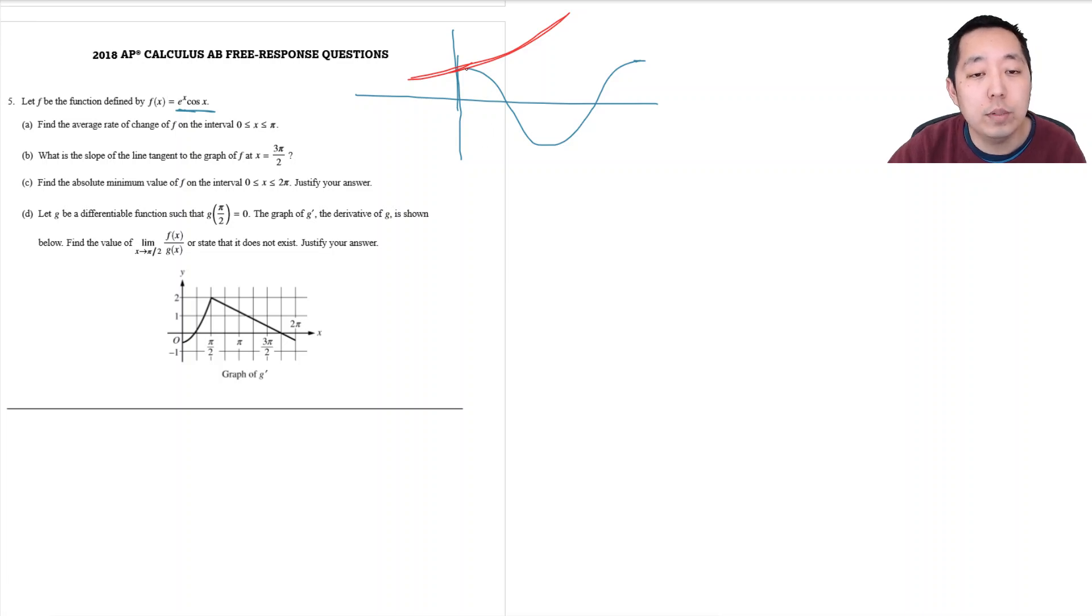When I want to do average rate of change, rate of change is always some kind of slope, but because it's average it's a secant line slope.